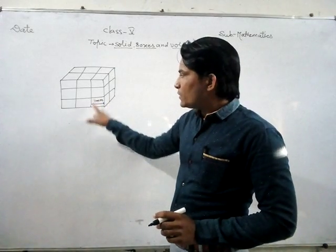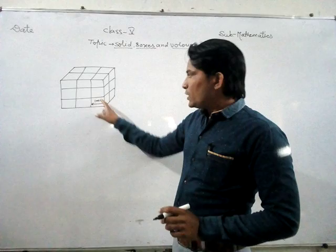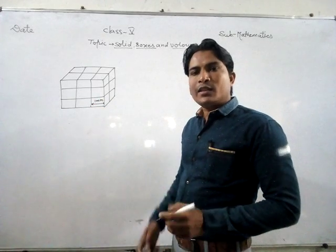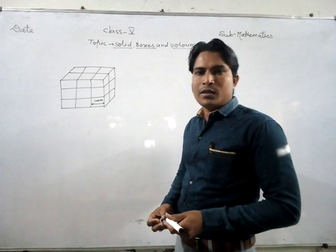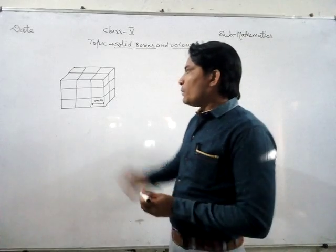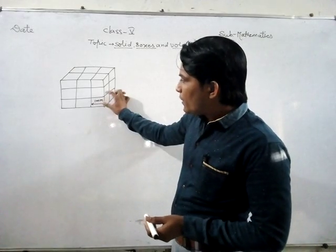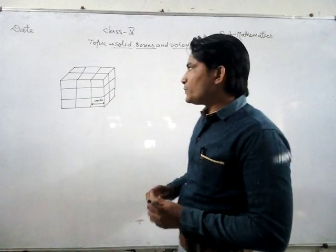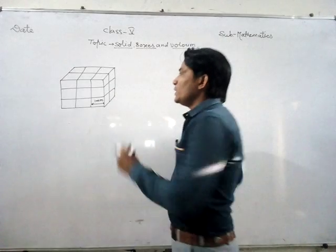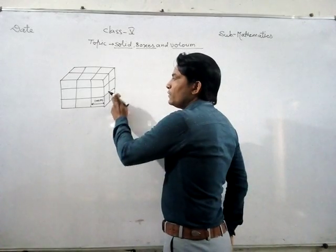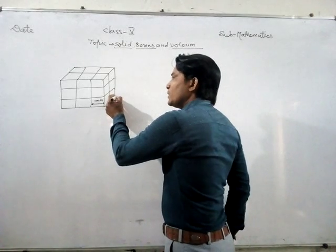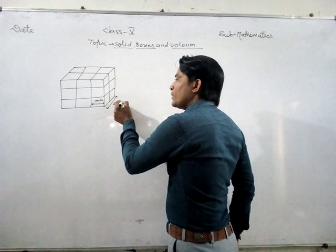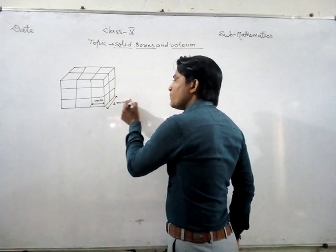Suppose this one is a square, so there is height and length. Length and breadth are all equal. So here, one mm is length and one mm is breadth. Suppose here one and one — so it becomes two mm, and two mm is breadth.